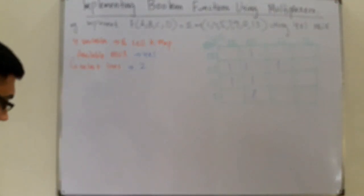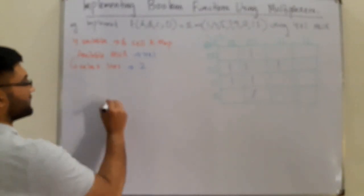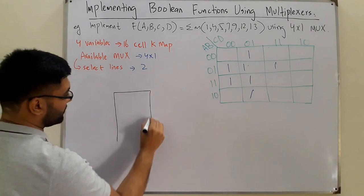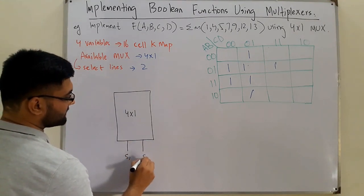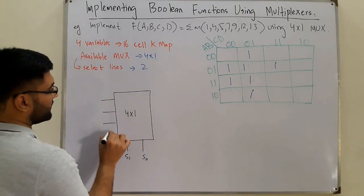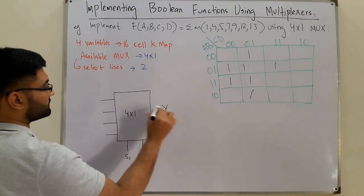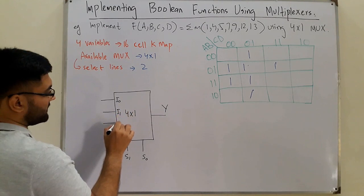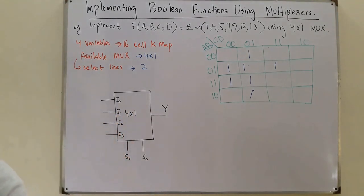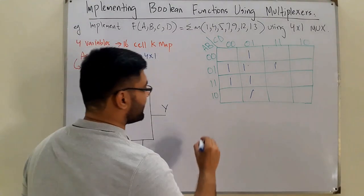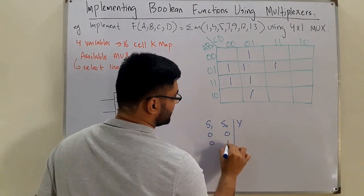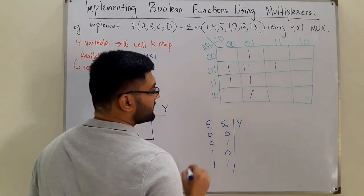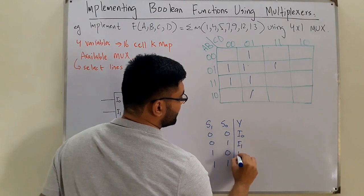Now draw a 4x1 multiplexer. It has two select lines S1 and S0, four inputs I0, I1, I2, I3, and a single output. With four variables and two select lines, the combinations S1 S0 give: 00, 01, 10, 11, corresponding to I0, I1, I2, I3.